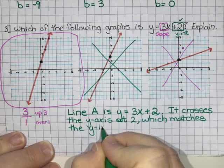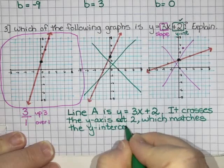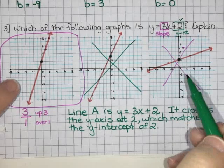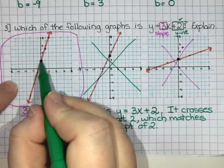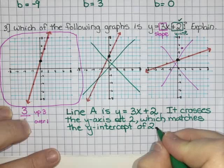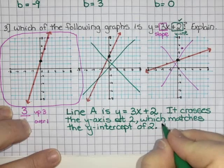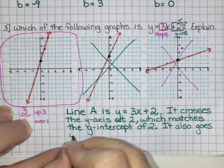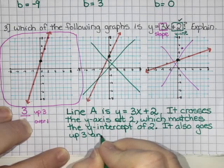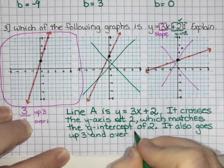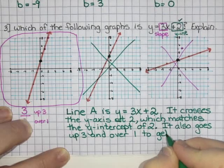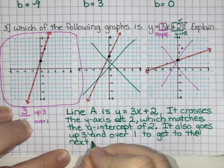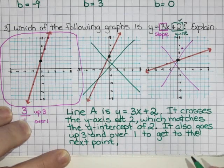Now that helped me narrow it down to these two, and then from there I used the slope. It had to go up 3 and over 1. I'm going to say it also goes up 3 and over 1 to get to the next point, which matches the slope of 3.